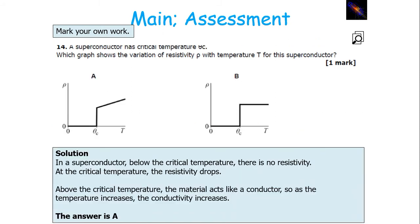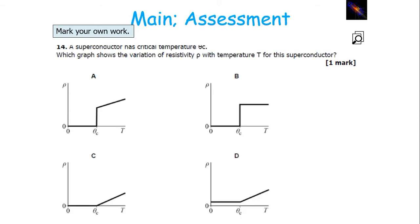This question asks for the graph of resistivity against temperature for a superconductor. In a superconductor, below the critical temperature there is zero resistivity. At the critical temperature the resistivity will drop, and above the critical temperature the material acts like a conductor. As the temperature increases, the conductivity increases. The only graph that shows that is A.